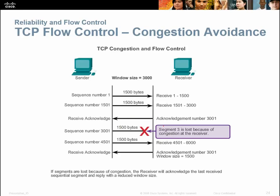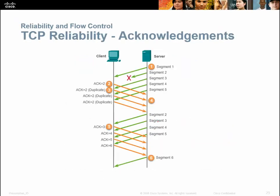If a segment is lost due to congestion at the receiver, it will be resent. It resends the lost segment, or it will reduce the window size. Similarly, if there's a block, it will detect the duplicate and tell the sender to reestablish.